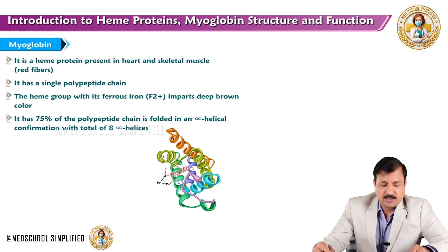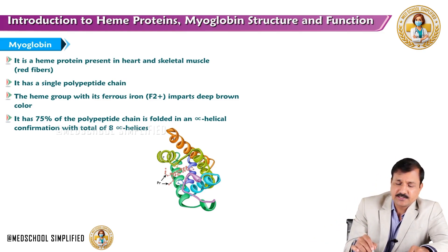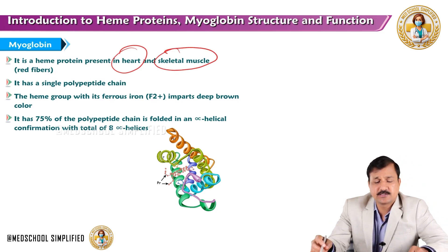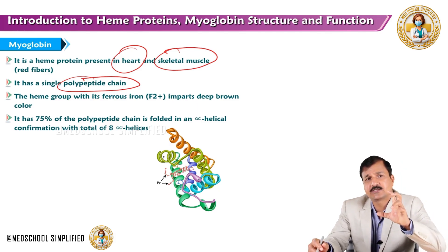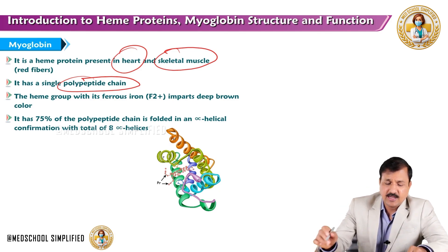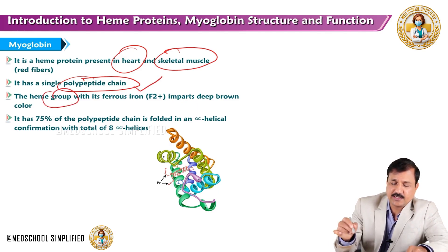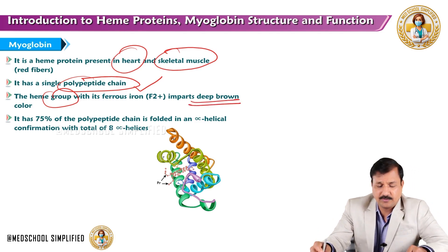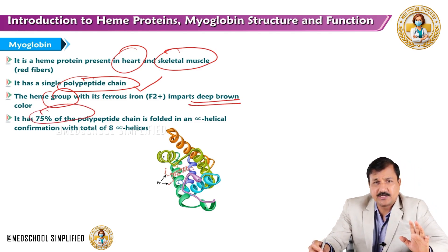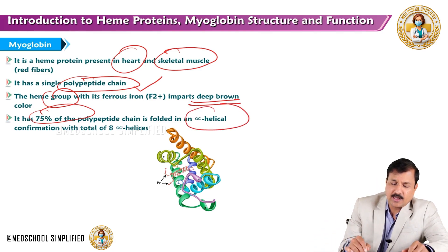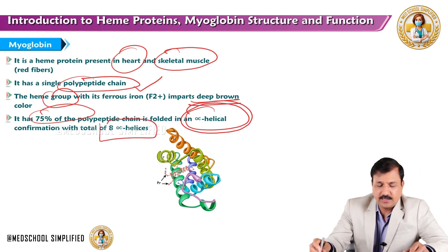Myoglobin is a heme-containing protein present in the heart and skeletal muscles, especially the red muscle fibers. It is a single polypeptide chain with one subunit — essentially one tertiary structure — and it has one heme group with ferrous iron in the center. That ferrous iron imparts a deep brown color to the myoglobin molecule. Around 75% of the polypeptide chains in myoglobin contain alpha-helical conformations, with a total of eight alpha-helical chains.